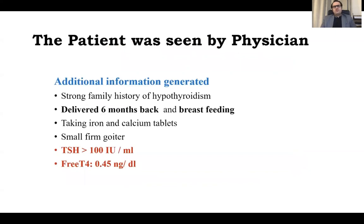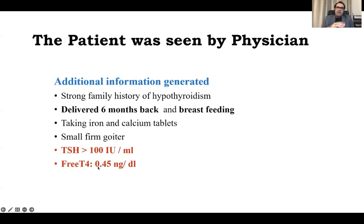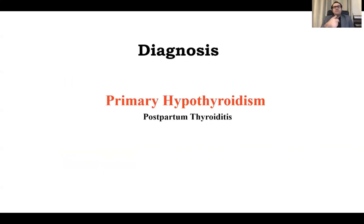The patient was seen by the physician. Additional information: strong family history of hypothyroidism, she was postpartum having delivered six months back and is now breastfeeding, and she is also taking iron and calcium supplements. On examination, she has a small firm goiter. The TSH is remarkably high — more than 100 — and free T4 is low. This means thyroid failure: free T4 is low and in compensation TSH is increased. The diagnosis is primary hypothyroidism, and because of the clinical scenario, it is likely postpartum thyroiditis.